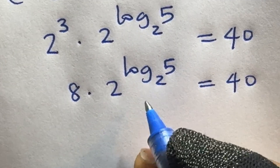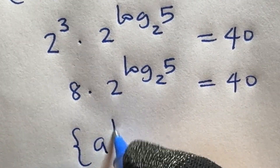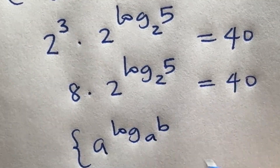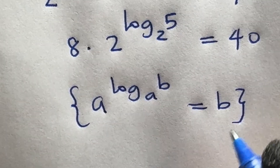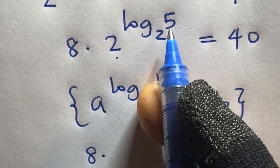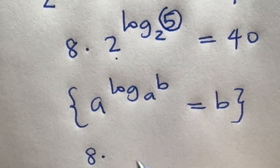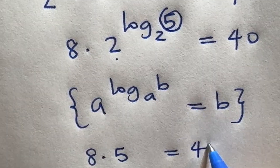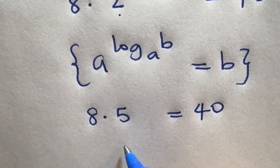By the log identity, a raised to power log b base a equals b. So 2 raised to power log 5 base 2 equals 5. Therefore we say 8 times 5 is equal to 40, and of course 8 times 5 is 40.